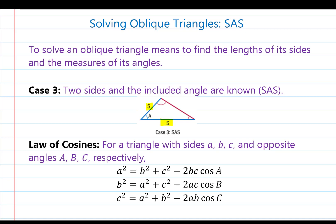What you may notice is that there's a pattern with all three versions. The pattern is: the square of one side of a triangle equals the sum of the squares of the other two sides, minus twice their product times the cosine of their included angle. Regardless of the version, you'll want to solve for either an unknown side on the left side of the equal sign, or the unknown angle.